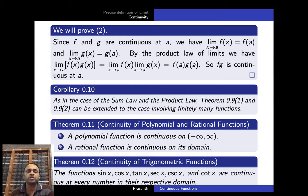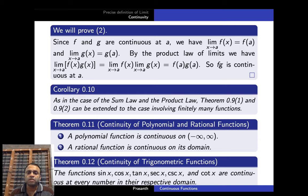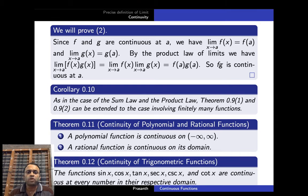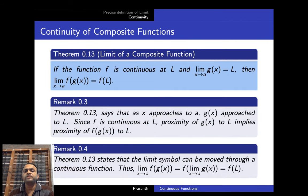A polynomial function is continuous on (−∞, ∞) — that means for any polynomial, without hesitation we can say it is continuous everywhere on the real line. As we defined yesterday, limit x→a p(x) = p(a) where p(x) is a polynomial. A rational function is continuous on its domain, which need not be all of (−∞, ∞). Similarly, sin x, cos x, tan x, sec x, csc x, and cot x are continuous at every point in their respective domains.